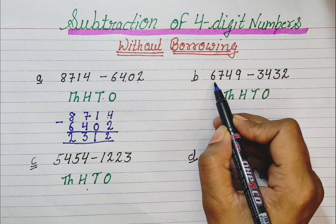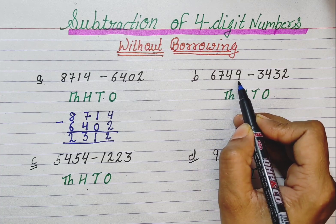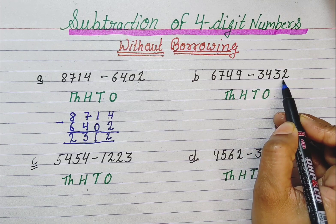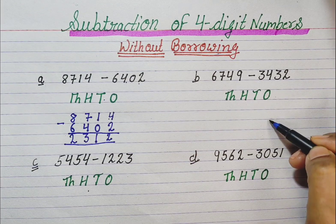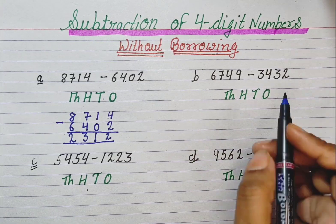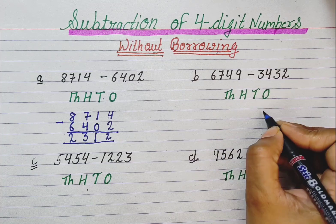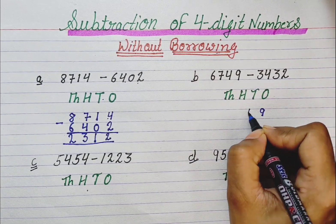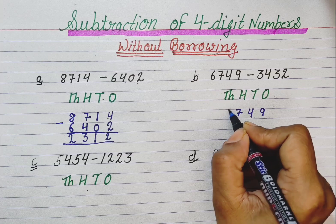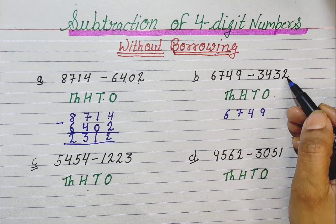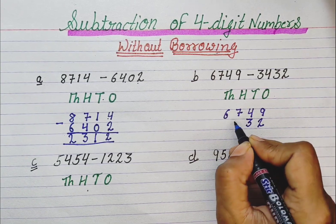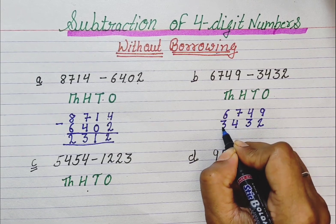Next question: 6749 minus 3432. First, we write the numbers one below the other. We write the top number: 9 in the 1's place, 4 in the 10's place, 7 in the 100's place, and 6 in the 1000's place. Now we write the bottom number below it: 2, 3, 4, 3.